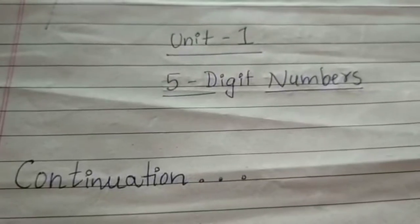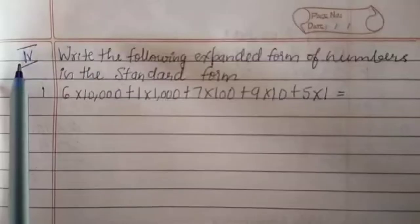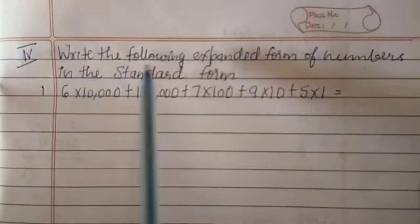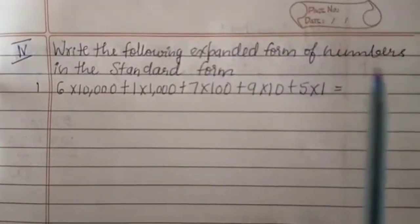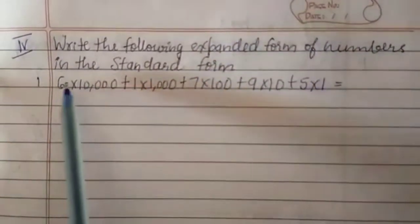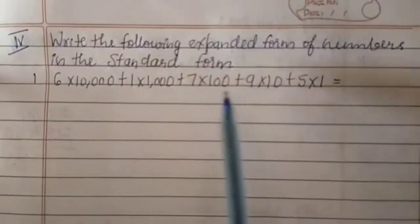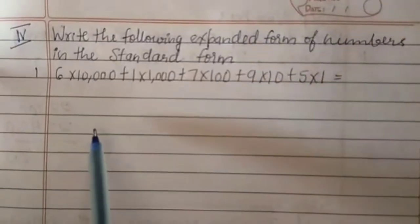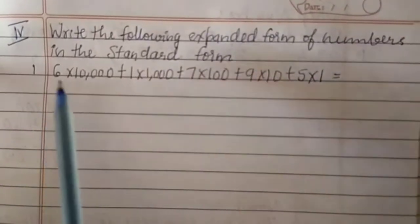Good evening students, let's continue the class. Roman number 4: write the following expanded form of numbers in the standard form. The numbers are given in expanded form and we are writing the answer in standard form.